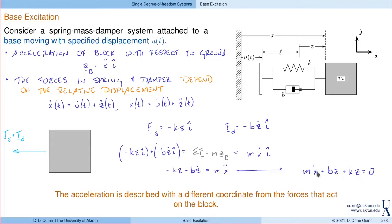If you look carefully, we still have two different coordinates here. We have X that describes the acceleration, while Z describes the forces. The acceleration is described with a different coordinate from the forces that act on the block. Notice it almost looks like there's no forcing - I don't have an F(t) on the right. But the fact that these coordinates are different will introduce a forcing term into this equation.